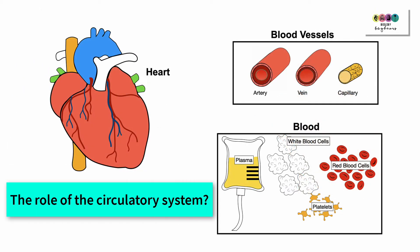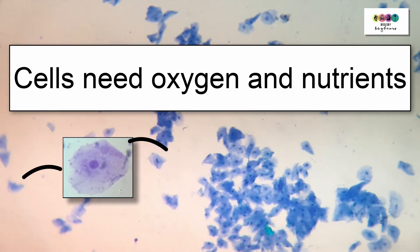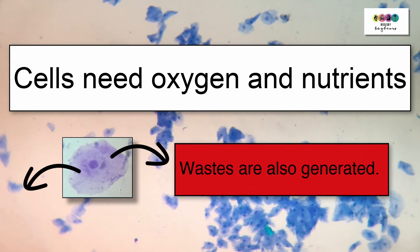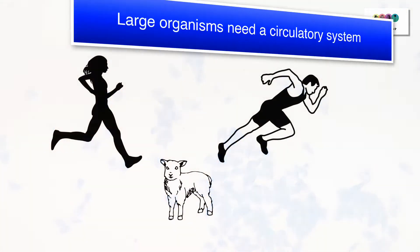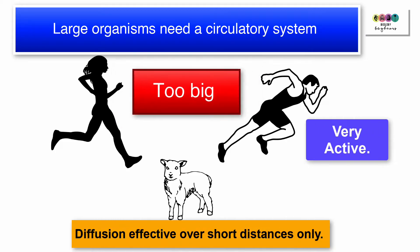So what is the role of the circulatory system? It's a transport system. Every single cell in the body requires oxygen and nutrients, and these are delivered in the blood. At the same time, the wastes that are generated by these cells need to be collected and removed in the blood. Large organisms such as humans need a circulatory system because we're too big and too active to rely on diffusion.